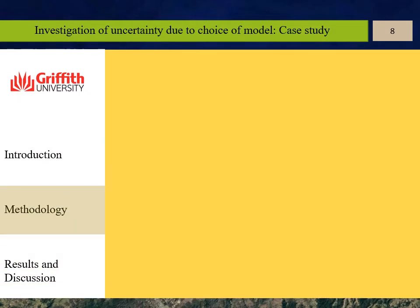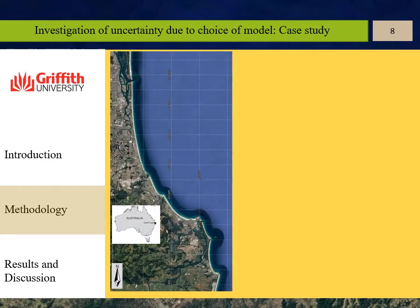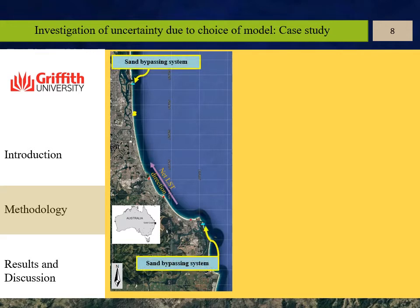In this study, we tried to understand the role of inter-model uncertainty in projection of longshore sediment transport patterns. A short stretch of coastline of Gold Coast, located in Australia, was selected as the case study. Gold Coast shoreline experiences one of the largest rates of longshore sediment transport in the world. The predominance of southeastern swell waves at this site results in a net longshore sediment transport to the north.